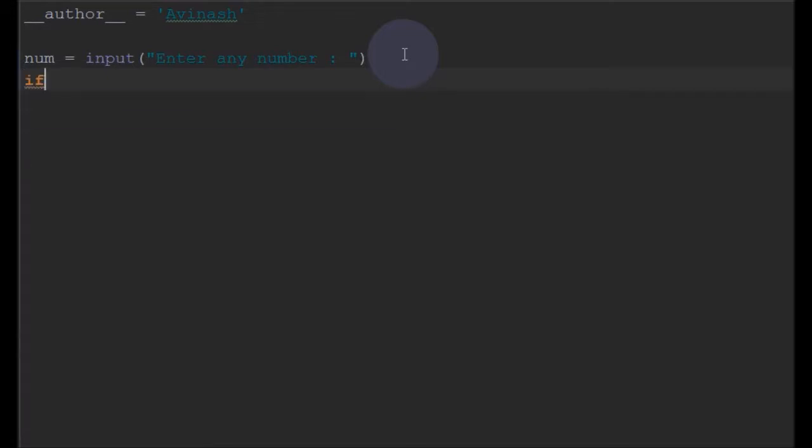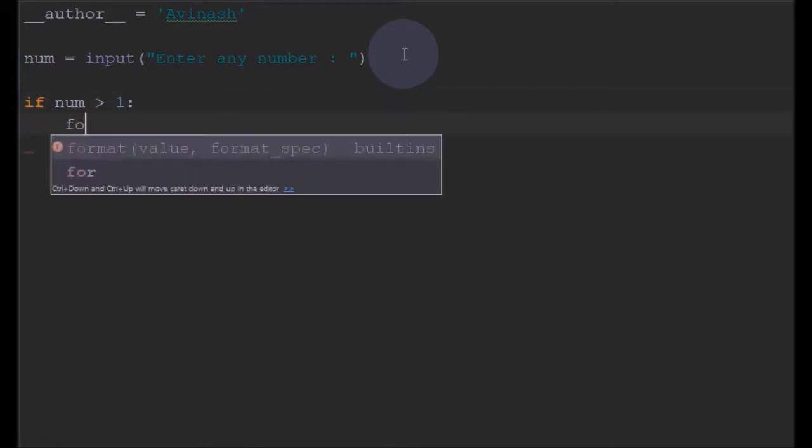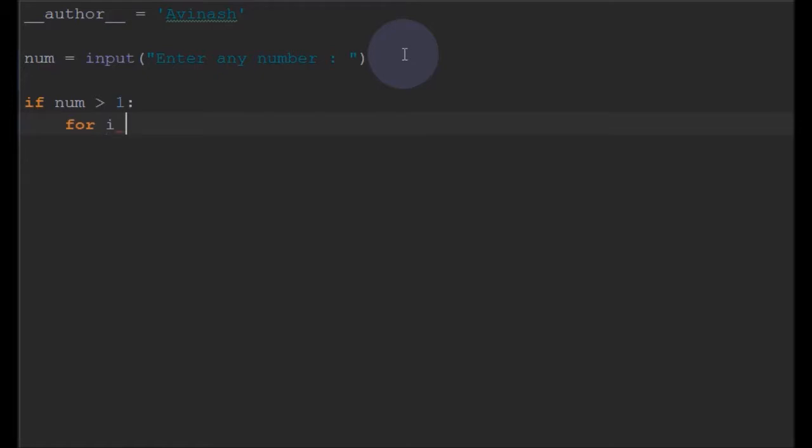First we'll check the condition if num is greater than one. If the number is greater than one, we'll write a for loop from 2 to the number entered. In this for loop,